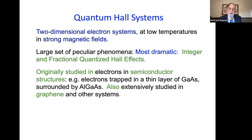Quantum Hall systems are two-dimensional electron systems studied in strong magnetic fields at low temperatures. There are a large set of peculiar phenomena that occur in these systems. The most dramatic of them are what we call the integer and the fractional quantized Hall effects, and I'll be mostly talking about the fractional one. These effects were originally studied by electrons in semiconductor structures — two-dimensional structures formed by trapping electrons in a thin layer of gallium arsenide surrounded by barriers made of aluminum gallium arsenide. But also, more recently, they've been very extensively studied in graphene and other layered molecule systems.